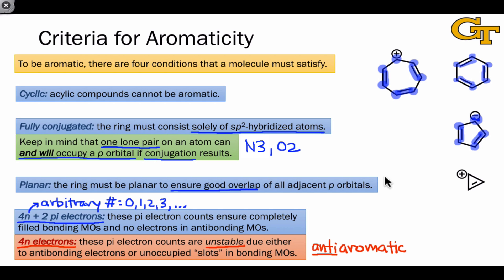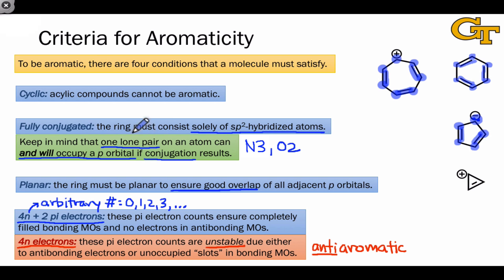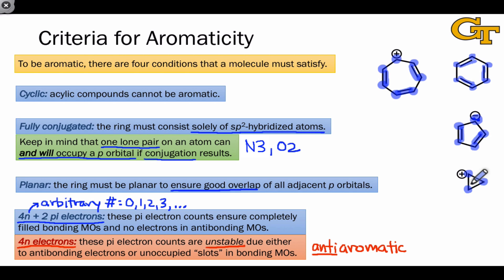Here's a molecule that at first glance might look horribly unstable, but if we quickly run it through the criteria for aromaticity, we find out something remarkable. The molecule is cyclic. It must be planar because it's a three-membered ring. It is fully conjugated because this is a carbocation with sp2 hybridization, and these two atoms are also sp2 hybridized. The molecule has 4N plus 2 pi electrons where N equals 0 — it has 2 pi electrons associated with the pi bond. So even this molecule is aromatic.